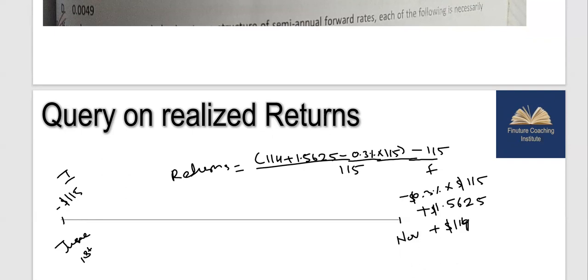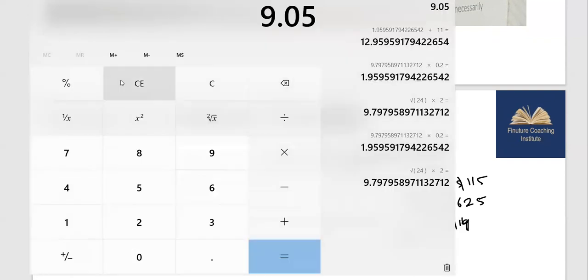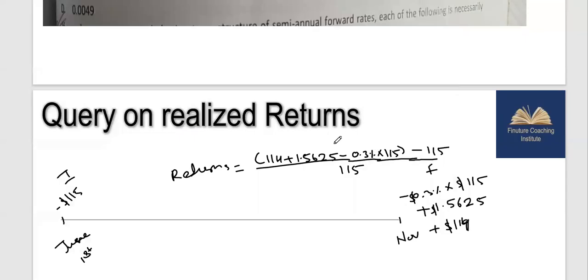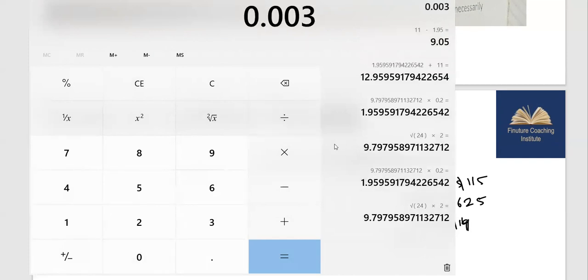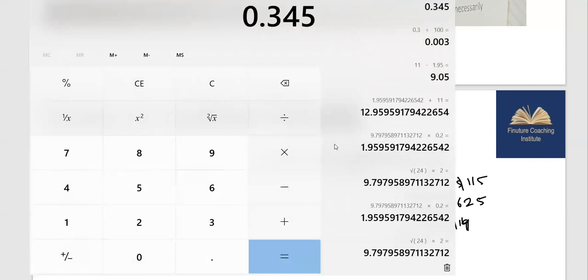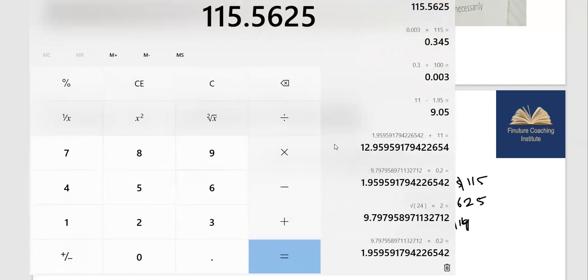Let's have a look at the calculations quickly. First let me calculate 0.3%, because it's for six months. So let me divide it by 100 and multiply by $115. This is your interest outflow, so just remember 0.345. I'll add to get my final payment that I would get. These are the par amount and the interest amount less the interest that you will pay on your initial investment.